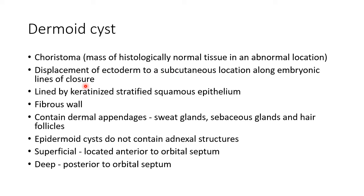A dermoid cyst is lined by keratinized stratified squamous epithelium. It has a fibrous wall and it contains dermal appendages like sweat glands, ceruminous glands, and hair follicles. Remember, epidermoid cysts do not contain adnexal structures.